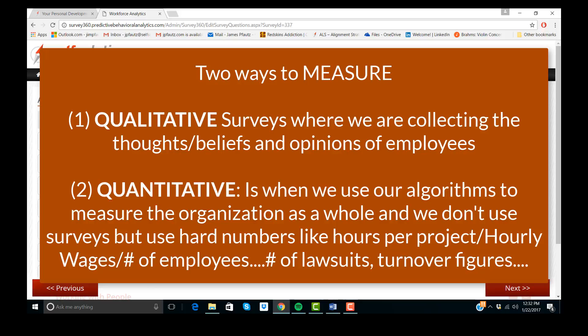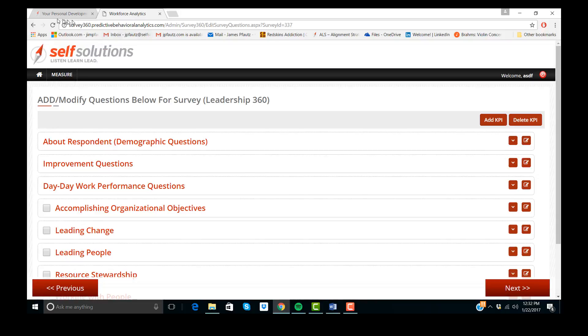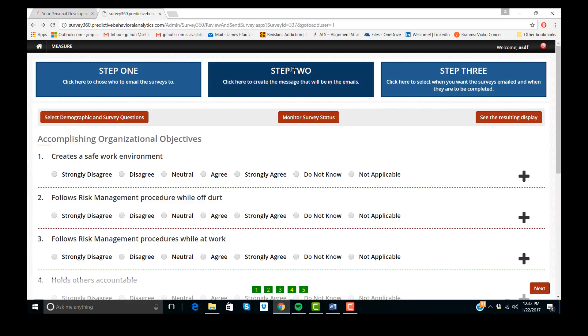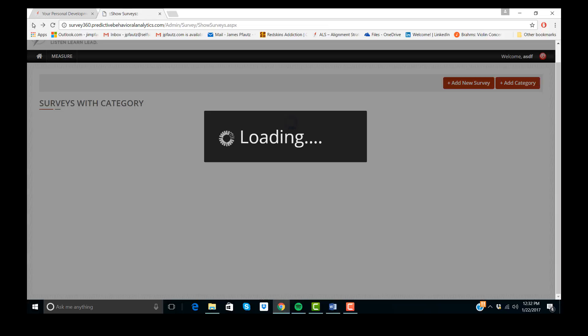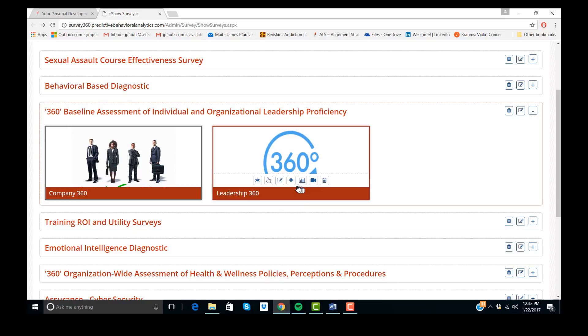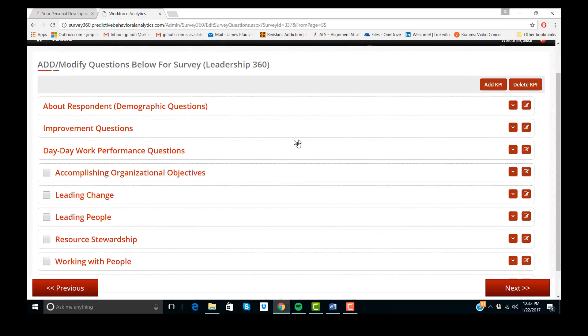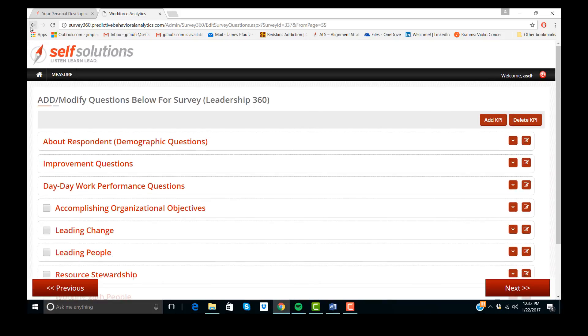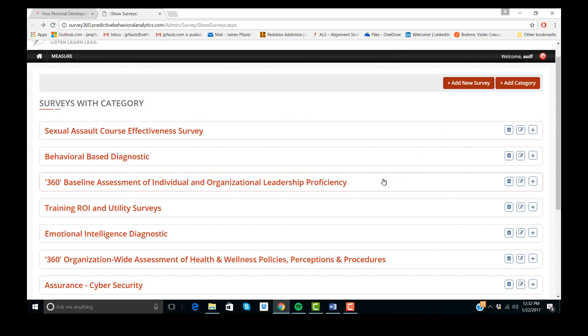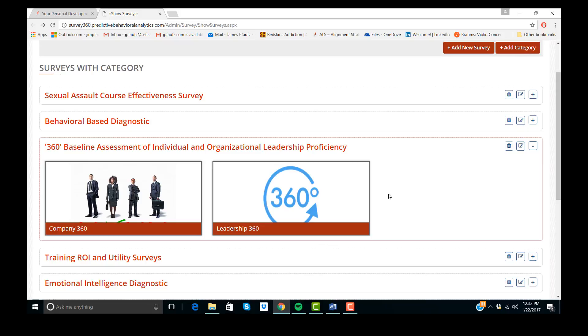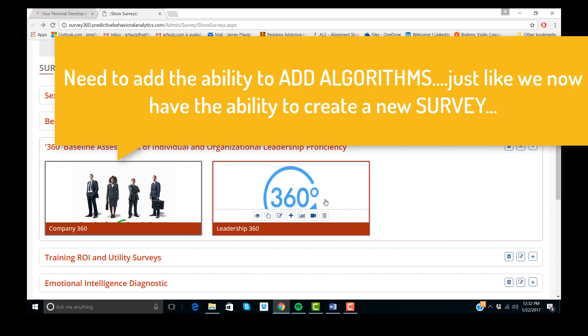An algorithm could be inputting the number of employees times their hourly wage divided by another factor. So in other words, when we go into here and we say, let's create a survey. Let's go back to here real quick. If I want to add a survey, what type of questions would it be? That's great for surveys. But we also need the ability to quantify the quantitative. In other words, the algorithms that would not require surveys, but would just be regular data from the organization.